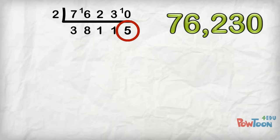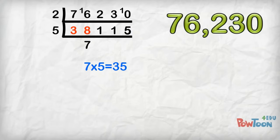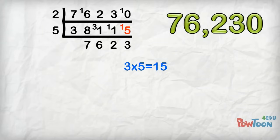Our answer ends in 5, which means it is divisible by 5. So, 5's into 38, 7. 5's are 35, remainder 3. 5's into 31, 6. 5's are 30, remainder 1. 5's into 11, 2. 5's are 10, remainder 1. 5's into 15, 3. 5's are 15.